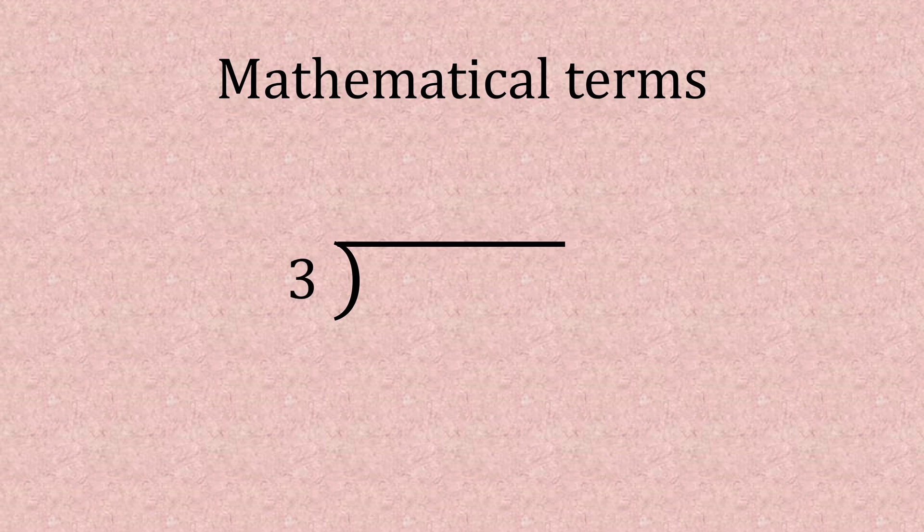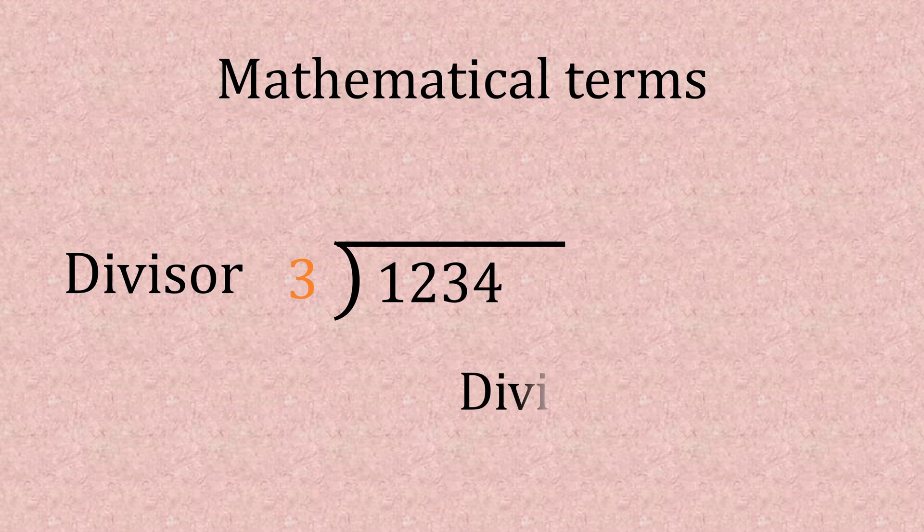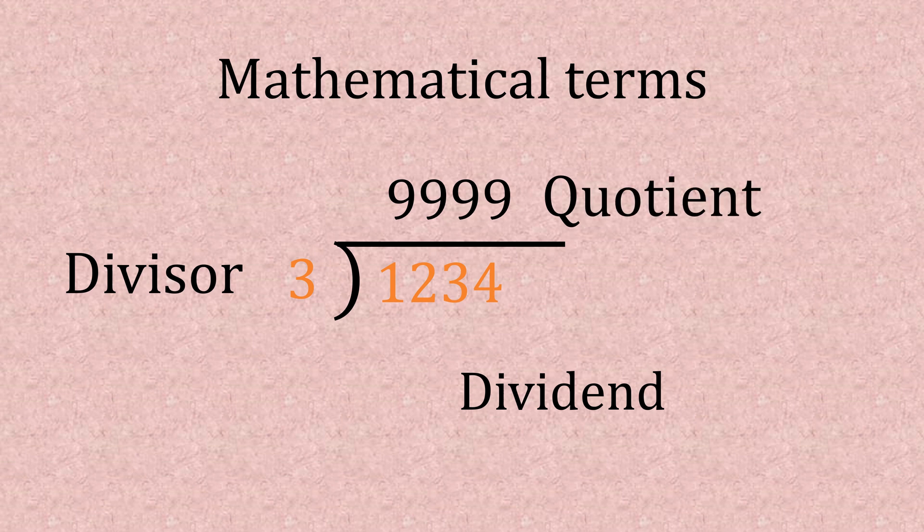It's also useful to know the mathematical terms we use. This is a divisor. These numbers here in the bus stop, they're the dividends. And the ones on the top, that's the quotient.